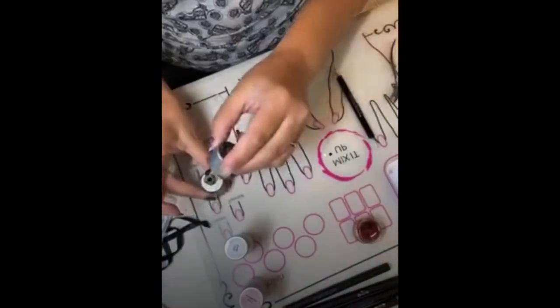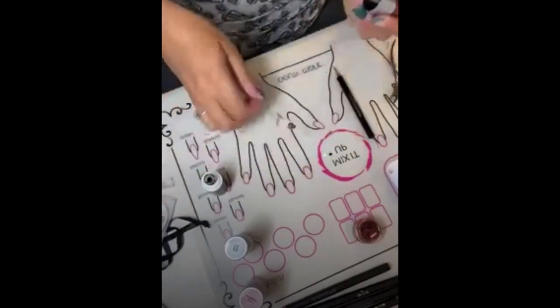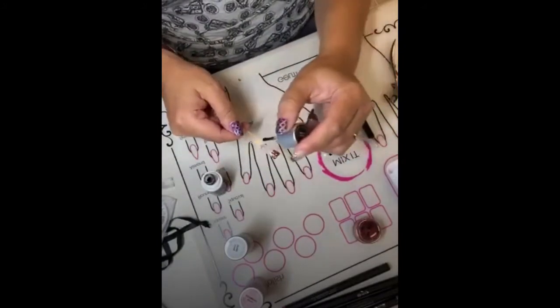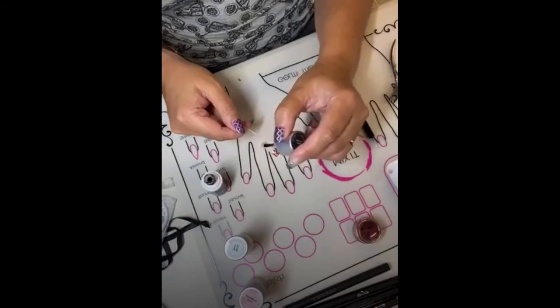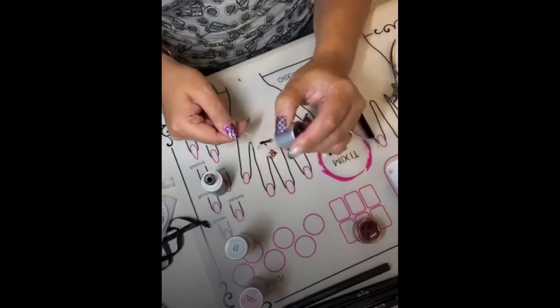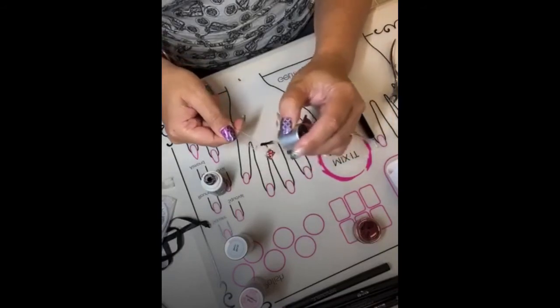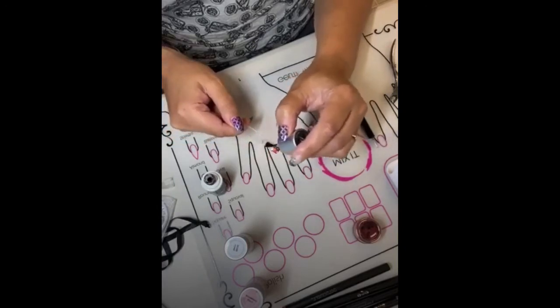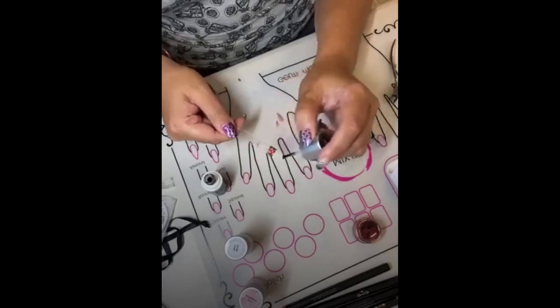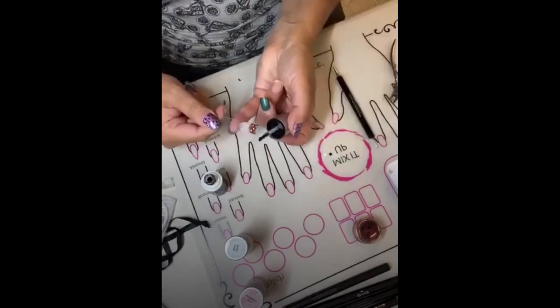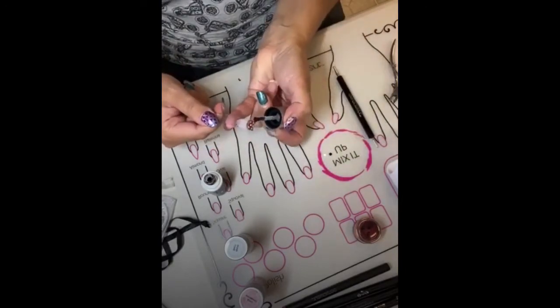Now we are ready to apply our top coat to seal the chrome and also seal that styling strip. I like to give a nice coat of the Clearly Frisky on top, and again, remembering to cap your nail.